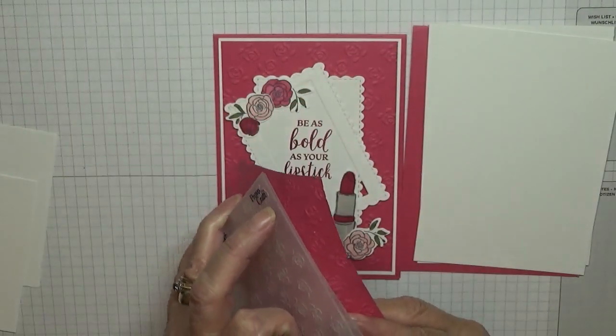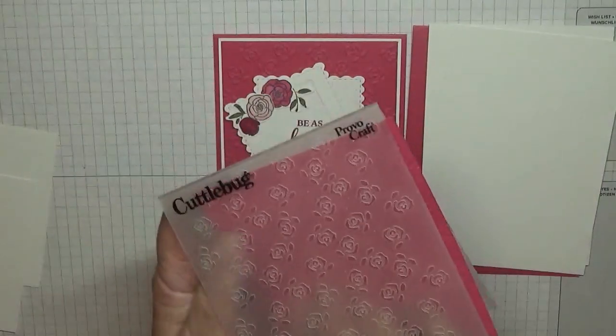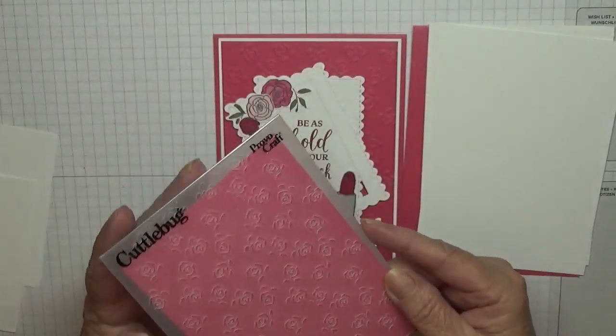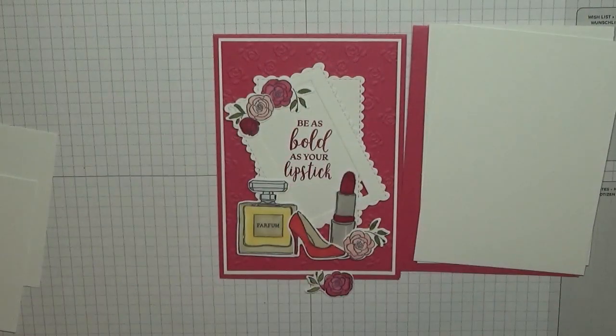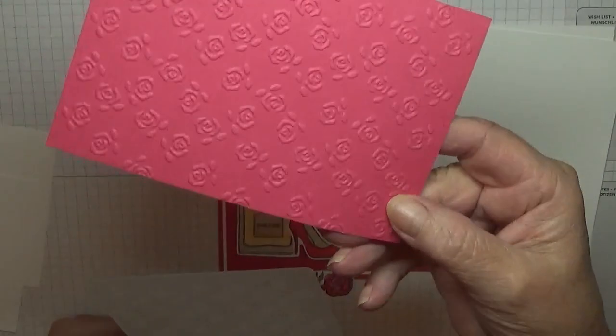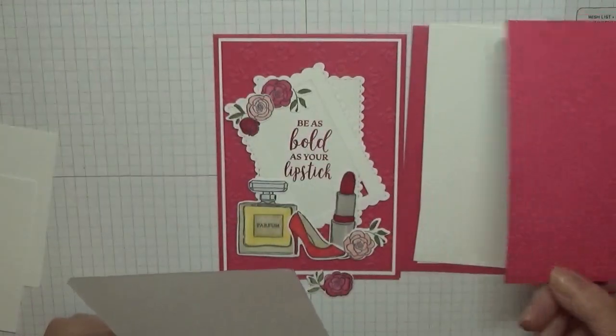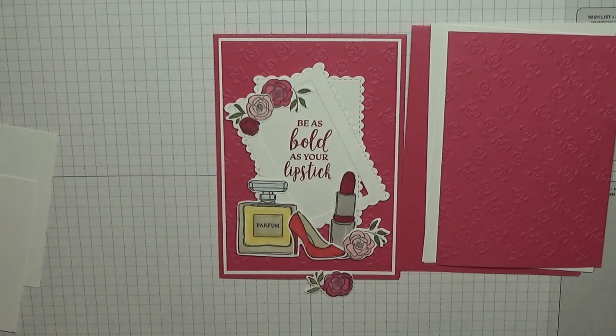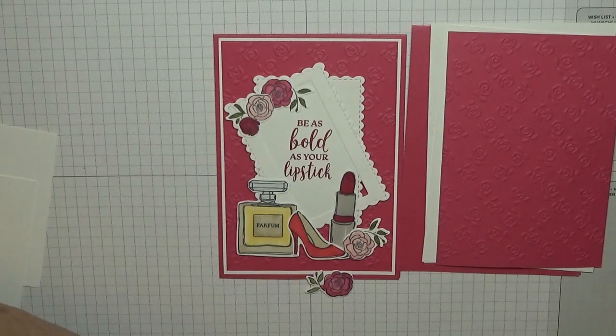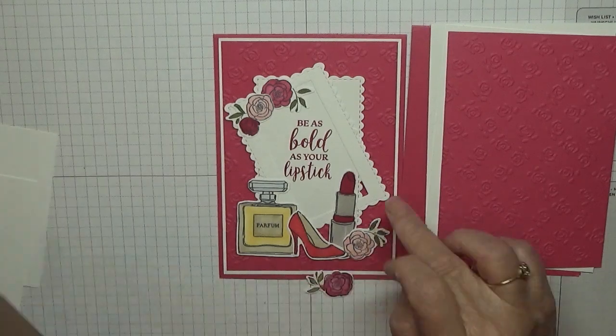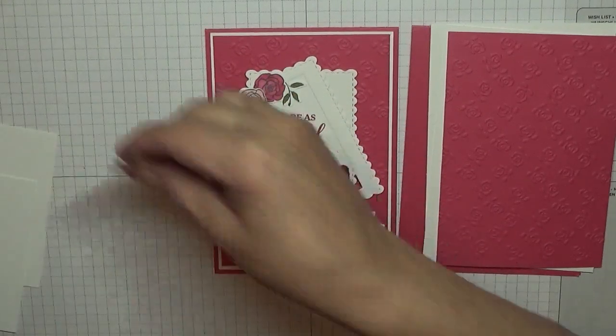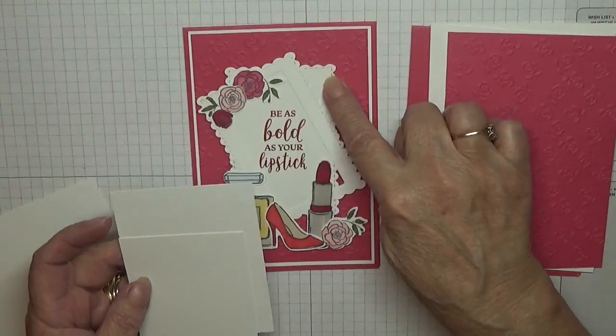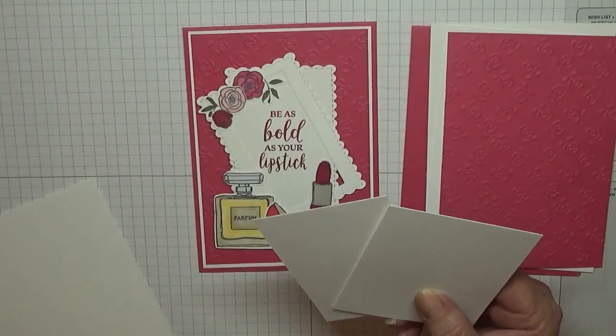I've already run this through with the Big Shot. And you'll also need some scraps of white for all the little bits that you're going to stamp, and also some white for the frame and the bit behind.